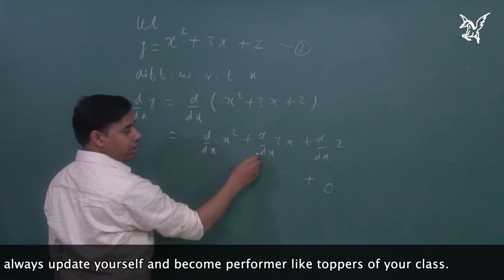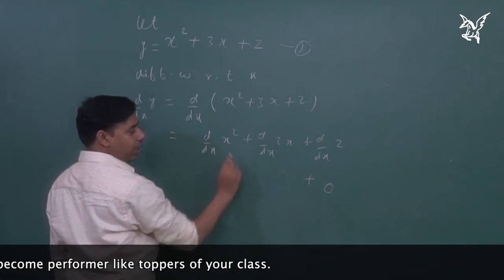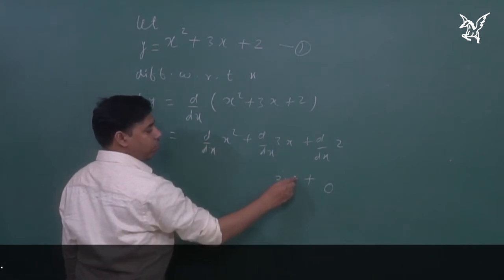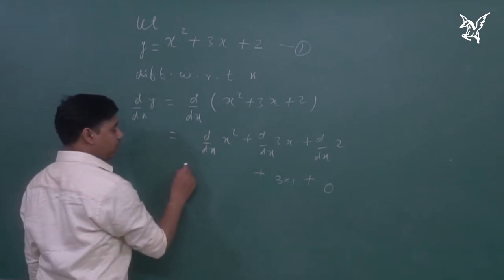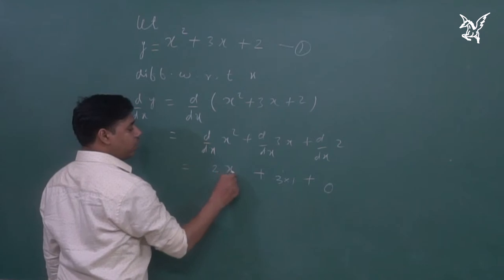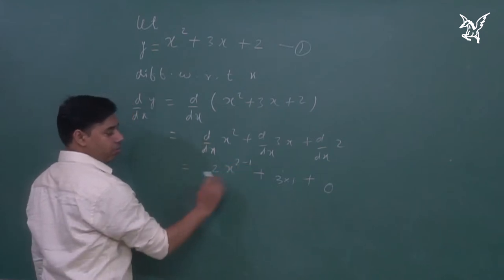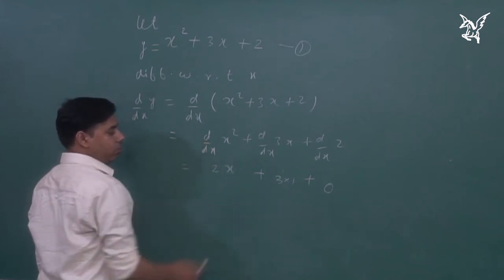What will happen with 3x? Three is constant. It will go out and x will become 1. That means 3 into 1. And x squared, what will happen? x to the n becomes n times x to the n minus 1. That means 2x to the 2 minus 1, which equals 1. So here we have to write 2x here.